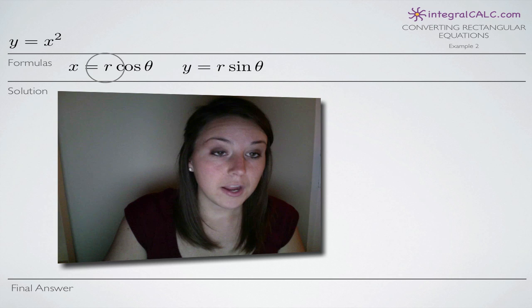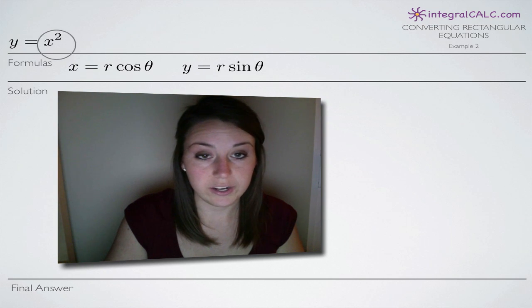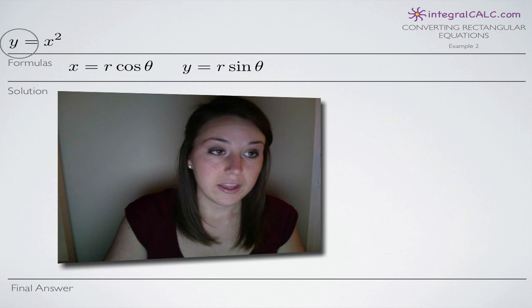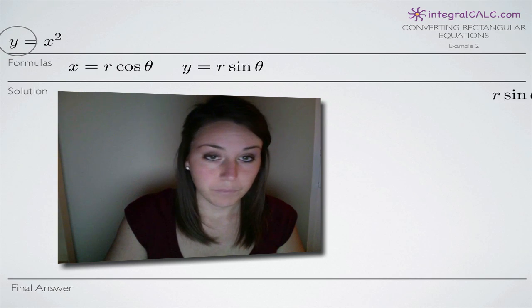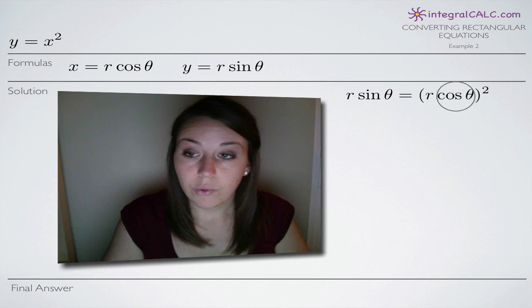What we'll do is plug in r cosine of theta for x, so here in our original function, and we'll plug in r sine of theta for y here into our original function. So when we make those two substitutions, we're left with r sine of theta equals the quantity r cosine of theta squared.